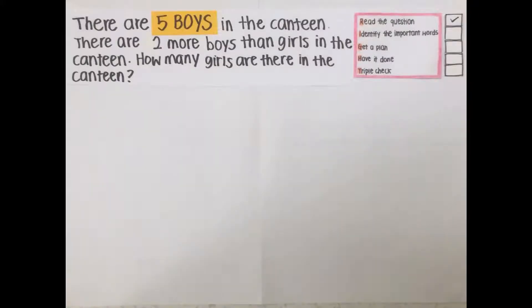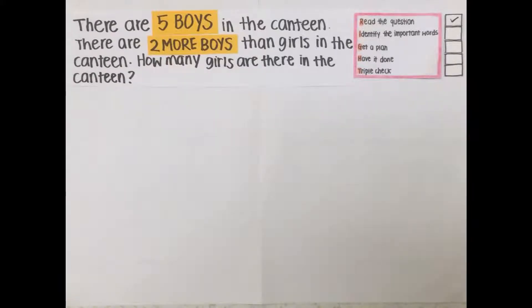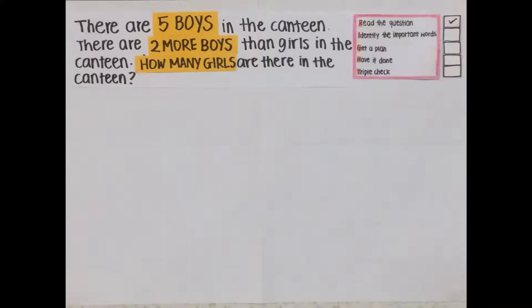The keywords are 5 boys, 2 more boys, and how many girls.